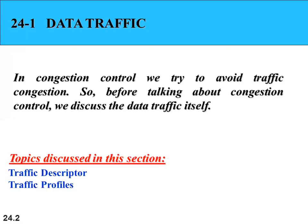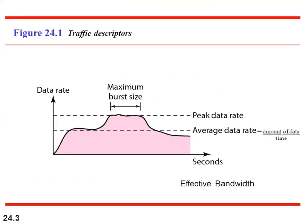Before understanding various congestion control techniques, we need to understand data traffic. There are various parameters that characterize data traffic: average data rate, peak data rate, maximum burst size, and effective bandwidth. Average data rate means the amount of data bits transmitted through the network over a period of time, calculated as the amount of data bits received divided by total time.